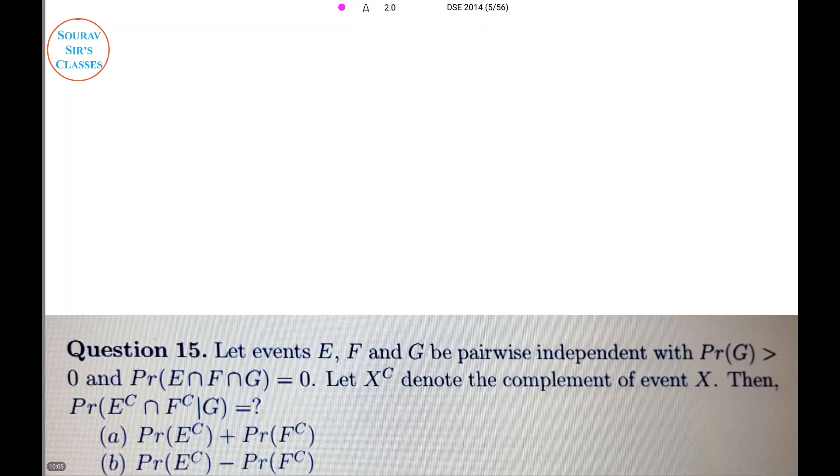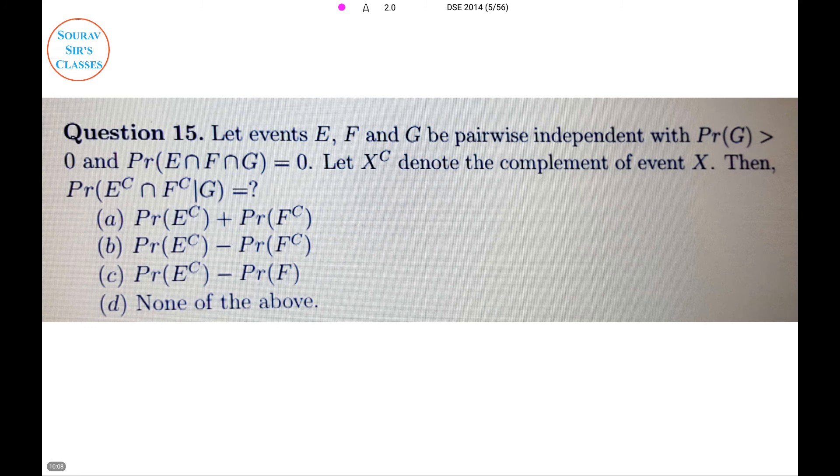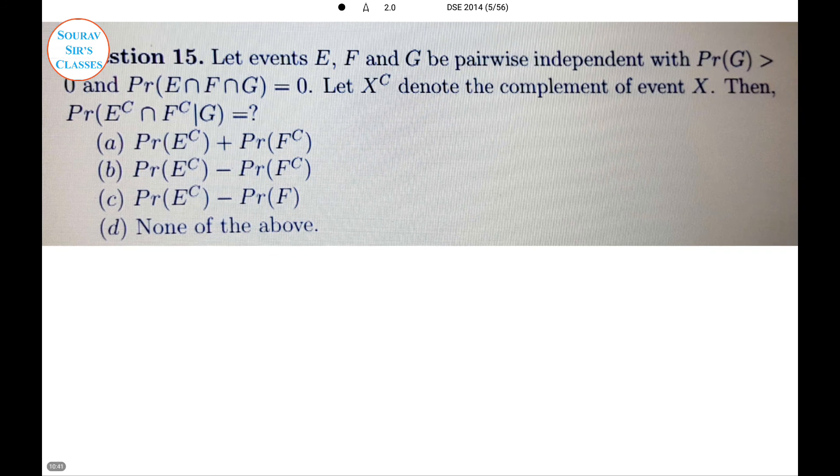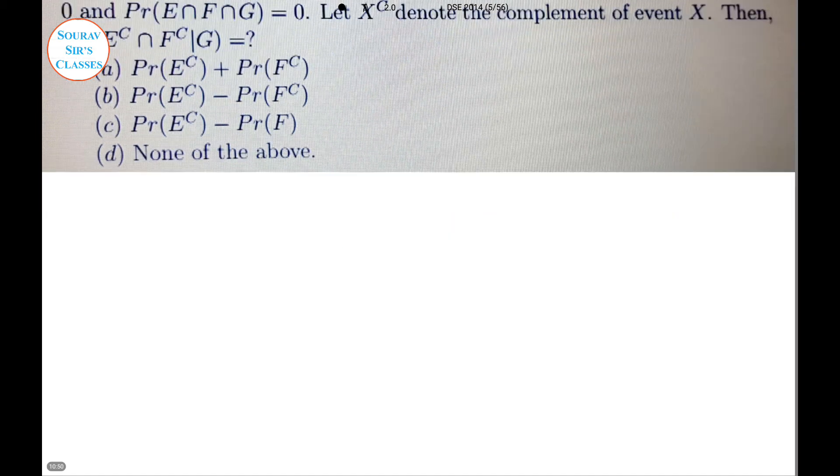The next question is again a probabilistic question. They have asked us about the structural format. They have given E, F, G be pairwise independent, where probability of G is greater than 0 and probability of E intersection F intersection G equals 0. So there is nothing common between E, F, and G all together. Let X complement denote the complement of event X. Then find the probability of E complement intersection F complement given G.